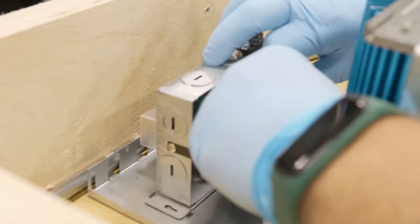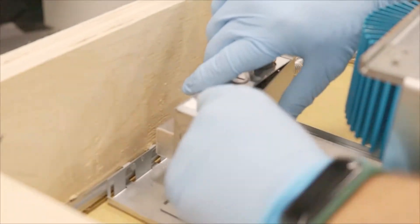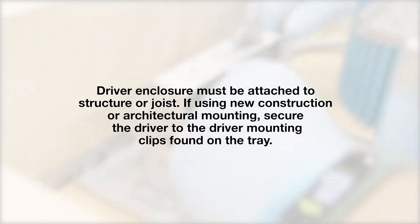Snap the driver box into position on the mounting plate. The door of the driver should be visible from the ceiling opening for the fixture. The driver enclosure must be attached to a structure or joist. If using new construction or architectural mounting, secure the driver to the driver mounting clips found on the tray.